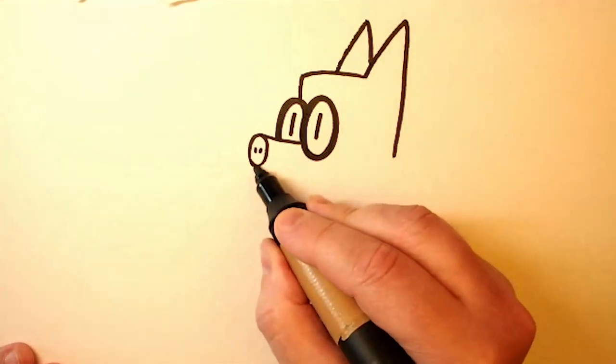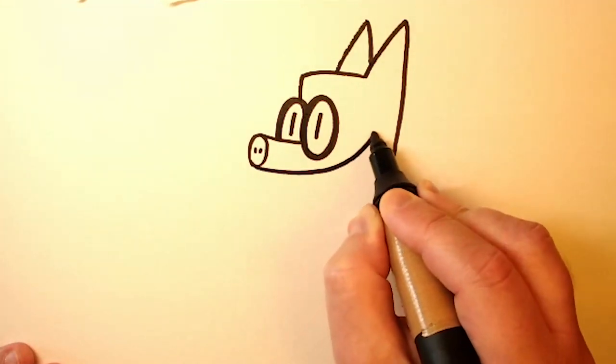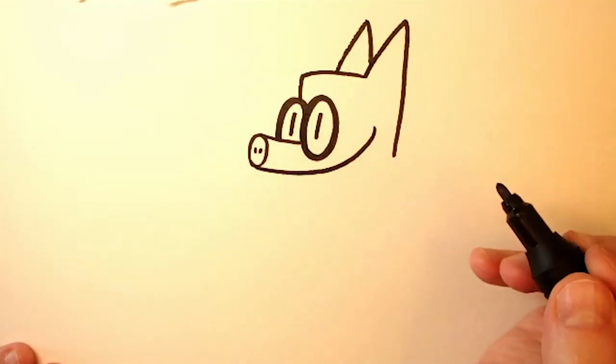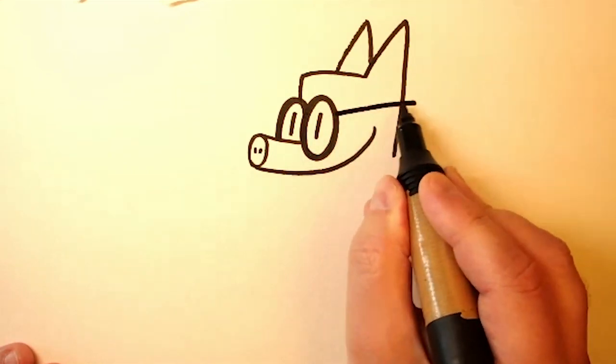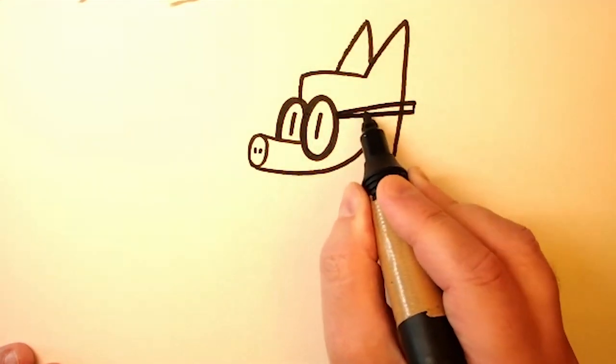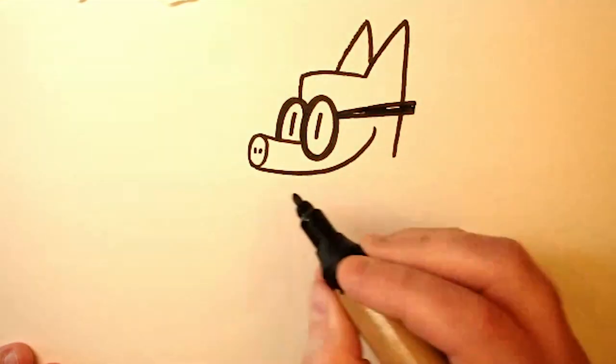And then a curved line to make Piggy smile. Okay, now we'll add one more thick horizontal line for the stem of Piggy's glasses.